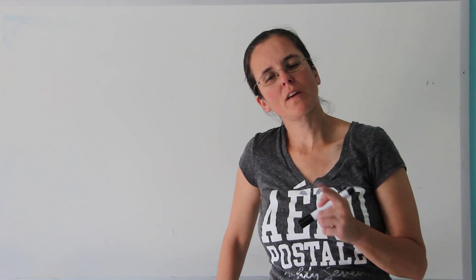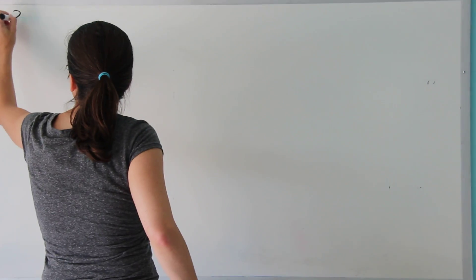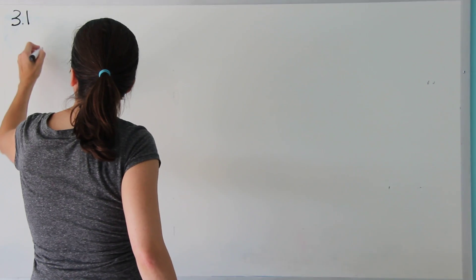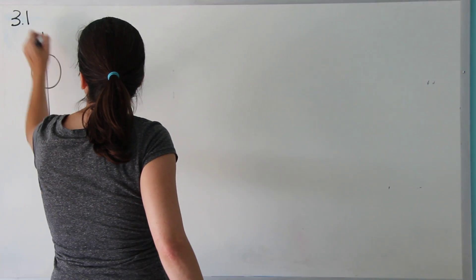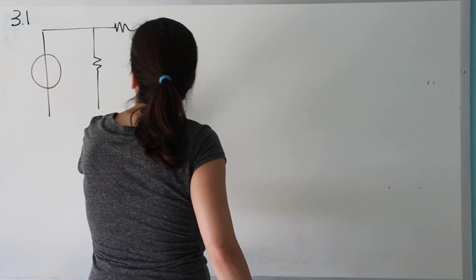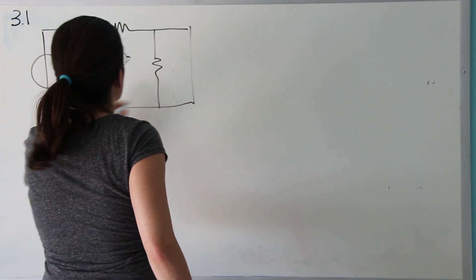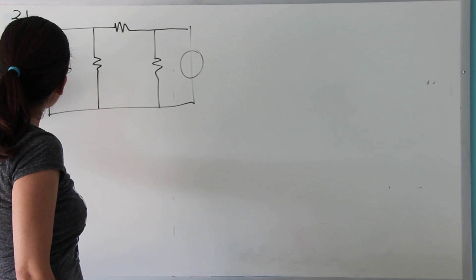Okay, so now we're going to do an example. It's actually a practice problem from your book, 3.1. And I'm going to copy exactly the circuit. It's three resistors and two current sources, one of 12 amps and one of 3 amps.